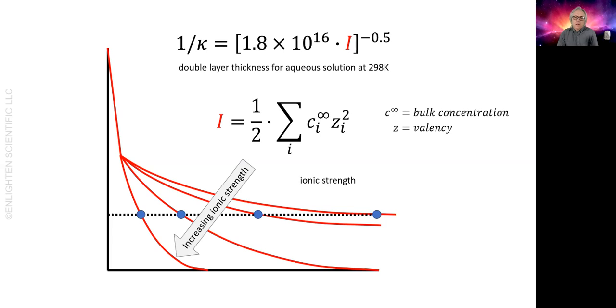So you can see that as you increase the ionic strength, the double layer becomes thinner. And when it's very thin, it's said to be collapsed.